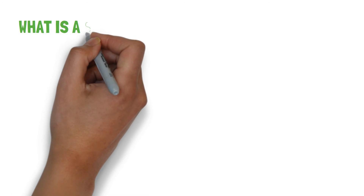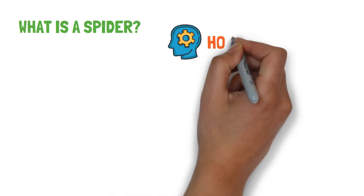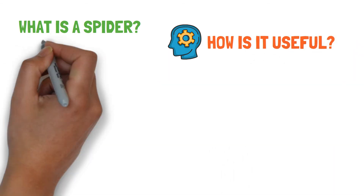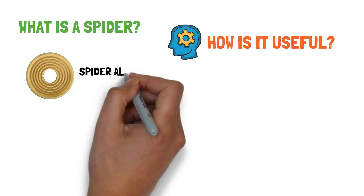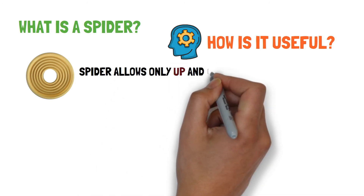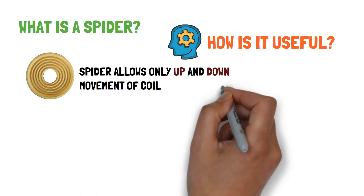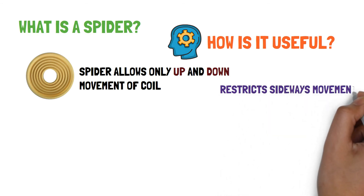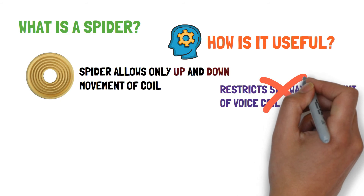Another component inside the speaker is called the spider. Because the voice coil moves when it interacts with the permanent magnet, the spider allows only the up-and-down movement of the voice coil but restricts the lateral or sideways movement. This is because only up-and-down movement can create vibrations in the diaphragm, whereas sideways movement can result in distortion of the diaphragm.